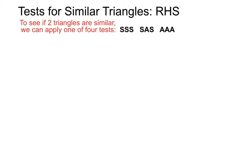If we're checking to see whether two triangles are similar, we can apply one of four tests. We've had videos on the SSS, SAS, AAA tests for similar triangles and this one's the RHS test.